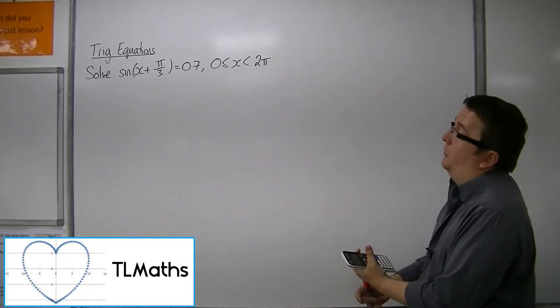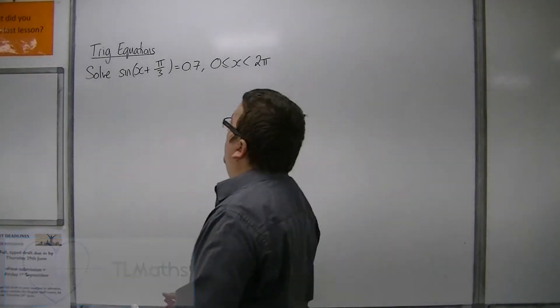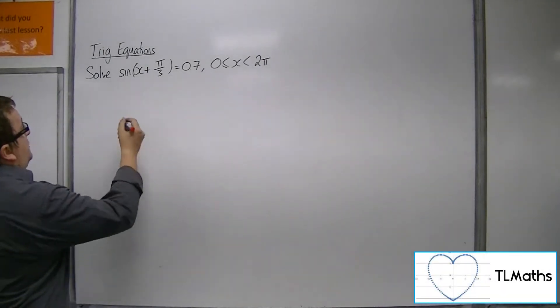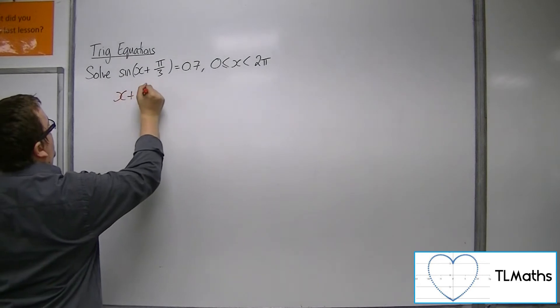Let's say I want to solve sin(x + π/3) = 0.7 between 0 and 2π. So first of all, inverse sine of both sides.